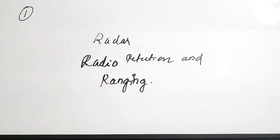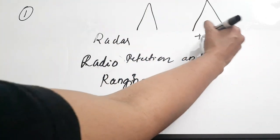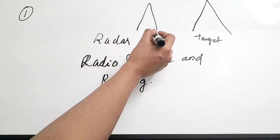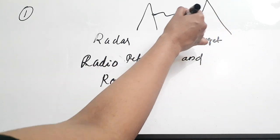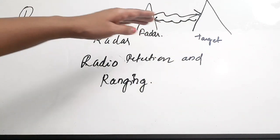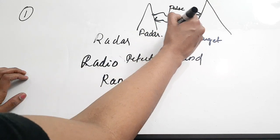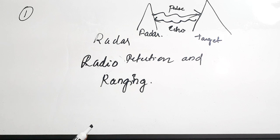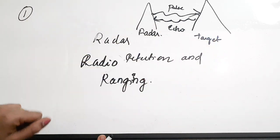Radar works on the principle of radio wave reflection. The basic principle is: there is a transmitter, there is a target which we want to detect, and the transmitter sends pulses which go and hit the target. Some reflections come back to the radar. It then calculates the time difference between the sent pulse and the echo received.